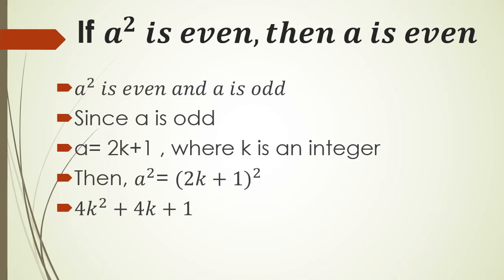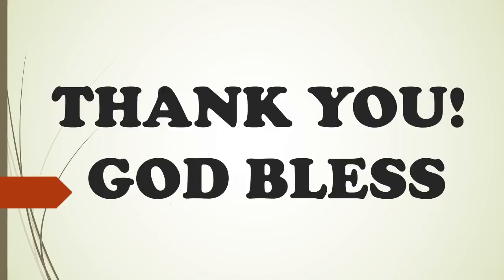Expanding: (2K + 1)² = 4K² + 4K + 1. Factoring out 2 gives 2(2K² + 2K) + 1. Since 2K² + 2K is an integer, A² = 2 × (integer) + 1, which means A² is odd. But we assumed A² is even — a contradiction. Therefore, A² being even implies A is even. That's all for this video, God bless everyone.